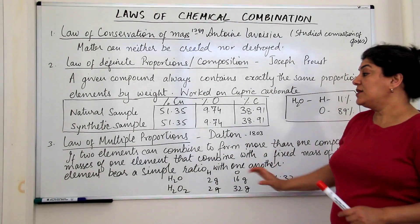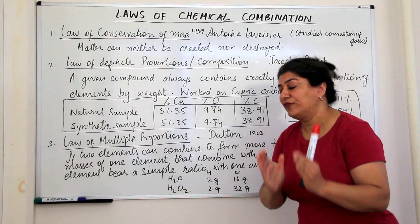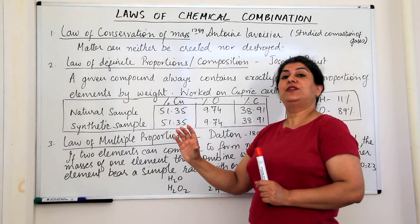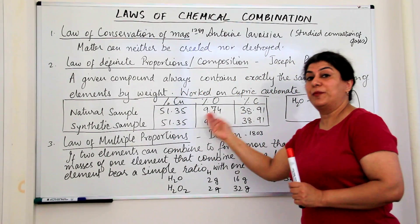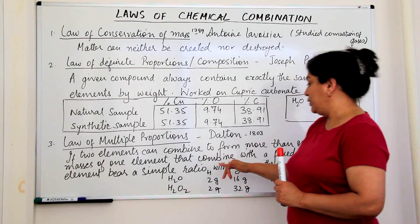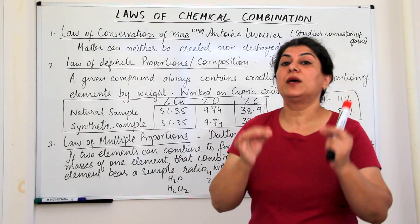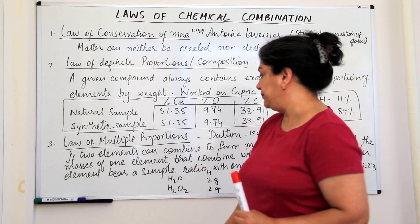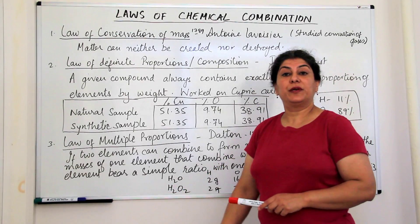Then the masses of one of these elements that combines with a fixed mass of the other. If the masses of one of these elements is fixed, then the masses of the other element which combine in different ways in both the compounds, they also should have a simple whole number ratio to each other.